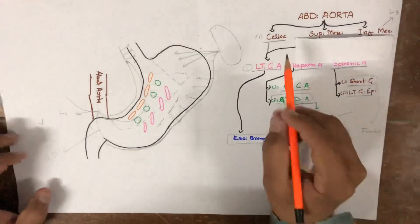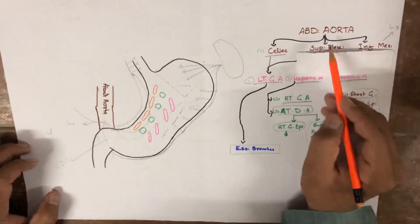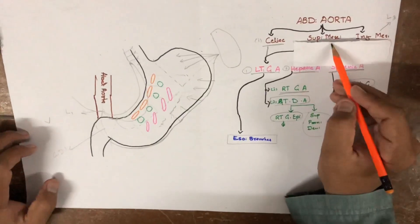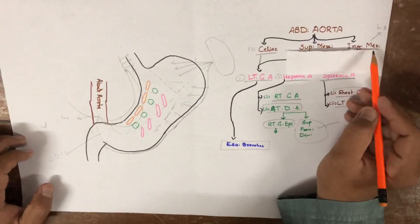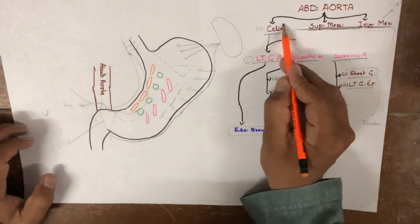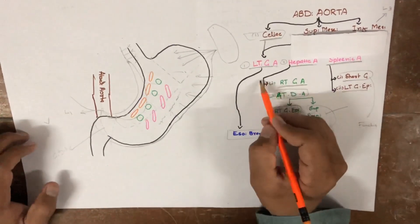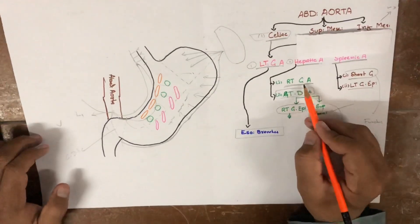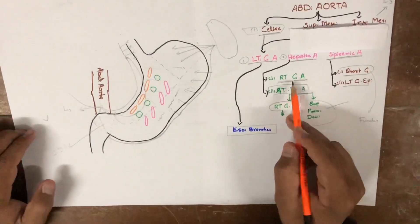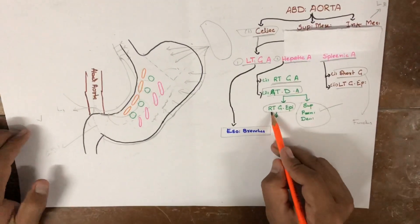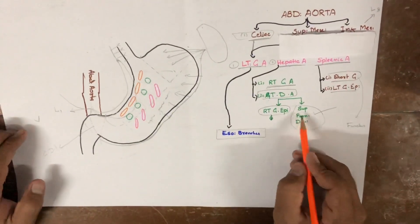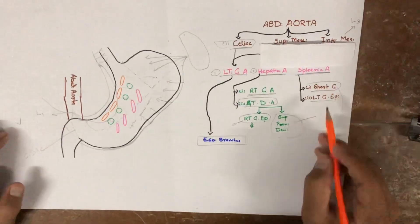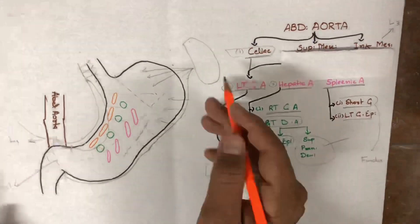Let's summarize what we learned today. The abdominal aorta gives three branches: the celiac artery at the upper border of L1, the superior mesenteric artery at the lower border of L1, and the inferior mesenteric artery at L3. The celiac artery is the main branch supplying the stomach, and it gives three branches. The first is the left gastric artery, which supplies the left curvature of the stomach. The second is the hepatic artery, which gives the right gastric artery and the gastroduodenal artery; the gastroduodenal artery in turn gives the right gastroepiploic artery and the superior pancreaticoduodenal artery. The third is the splenic artery, which gives the short gastric arteries and the left gastroepiploic artery, both of which supply the stomach.